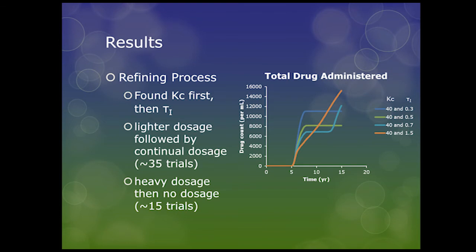We found that our initial gain and tau were entirely inadequate — much too weak — and we had to make them significantly more aggressive, to the tune of about 80 times the original value for the gain. We decided to find Kc first, because we really needed to make sure that the virus did not run away and kill the person, and found that it was optimized to get the lowest peak at a gain of negative 40. We then used our tau-i to choose the behavior of the curve afterwards.